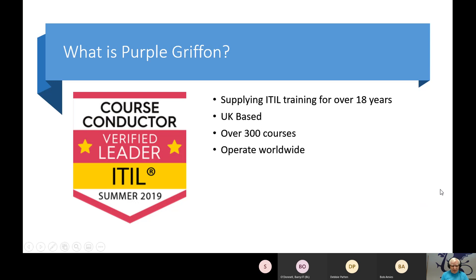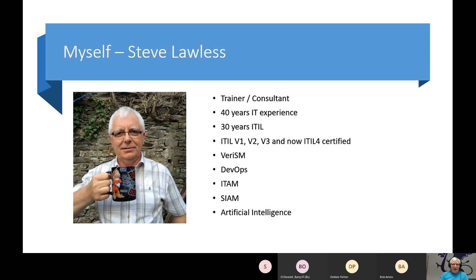A little bit about Purple Griffin and myself. Purple Griffin is an accredited training organization — we've been delivering ITIL training for over 18 years. We also deliver project management, Agile, DevOps, ITAM, artificial intelligence training, and cyber security. We operate worldwide, based in the UK. We offer self-paced training, instructor-led virtual training, and on-site and public scheduled face-to-face training, though a lot of that is on hold due to the ongoing pandemic.